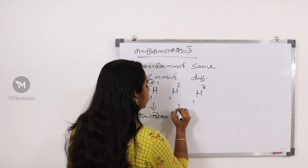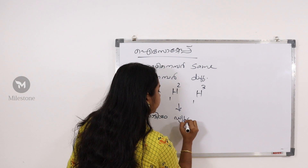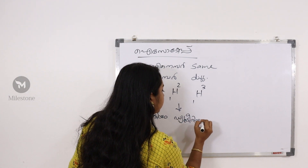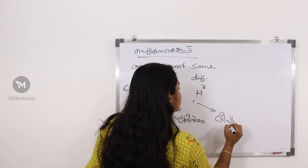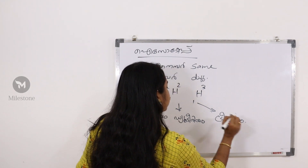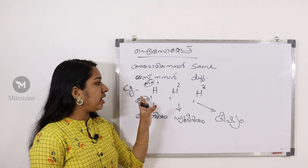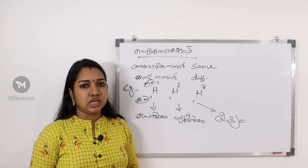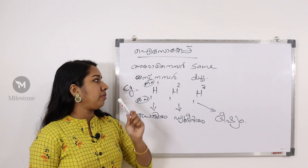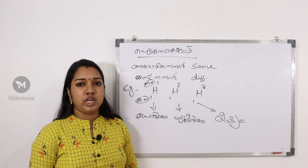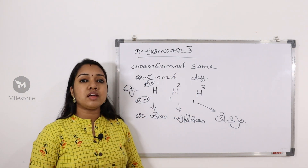Mass number 1 is protium, mass number 2 is deuterium, mass number 3 is tritium. Protium, deuterium, tritium — these are hydrogen's isotopes. Atomic number is the same, mass number is different — isotopes are clear.